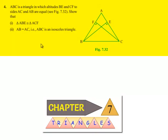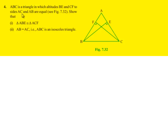Moving on to the fourth question: ABC is a triangle in which altitudes BE and CF to sides AC and AB are equal. Show that triangle ABE is congruent to triangle ACF, and that AB equals AC, i.e., ABC is an isosceles triangle.